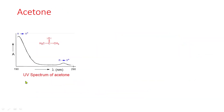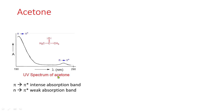This diagram is the UV spectrum of acetone. Here, pi-to-pi-star is an intense absorption band and n-to-pi-star is a weak absorption band.